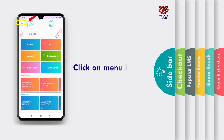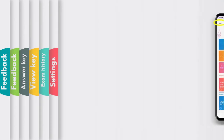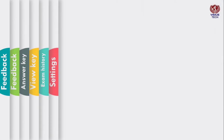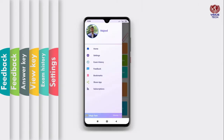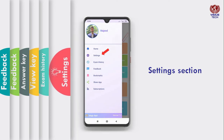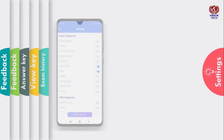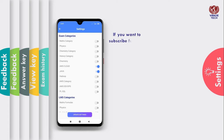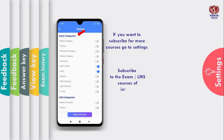Click on the menu button. Go to the Settings section. If you want to subscribe to more courses, go to Settings and subscribe to the exam or LMS courses of interest, then update settings.